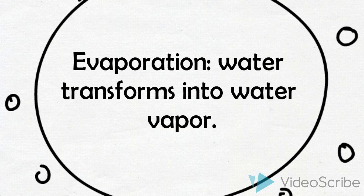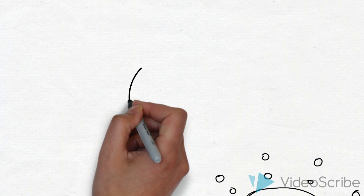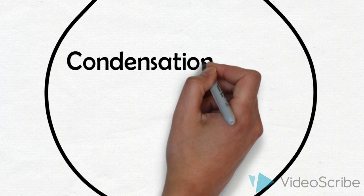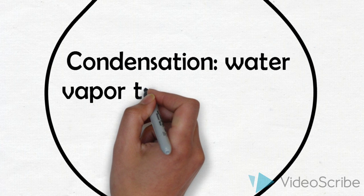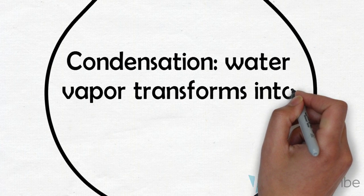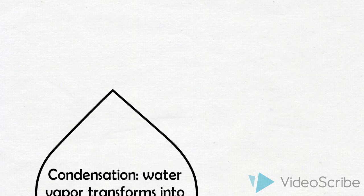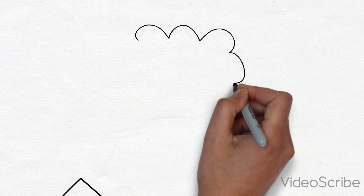As the water vapor rises into the sky and reaches the cooler air, it turns into little water droplets. These water droplets form clouds. This process is called condensation. Eventually, the cool air transforms enough water vapor into water droplets that the clouds become heavy.